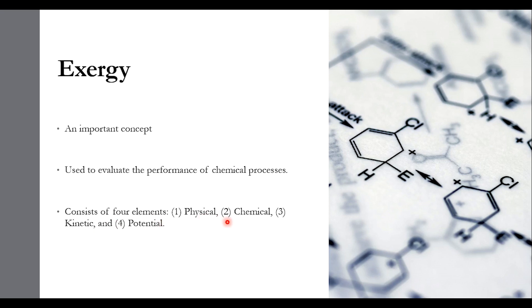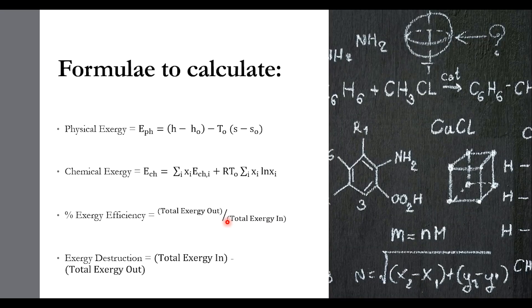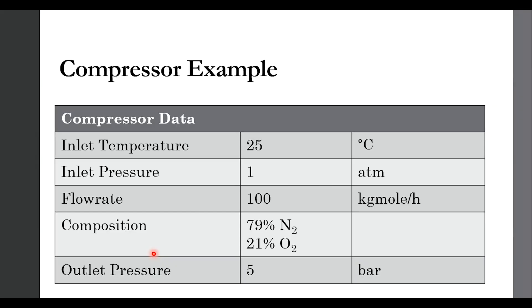Physical and chemical exergies are included. Physical exergy will be taken from Aspen Hysys in this lecture — previously we took it from Aspen Plus. The procedure in Aspen Hysys is different from Aspen Plus, but the values will be the same if we use the same reference conditions. We will also cover the chemical exergy formula, percentage exergy efficiency formula, and exergy destruction formula.